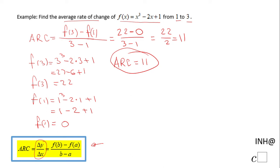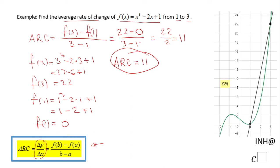What you see here is the graph of f(x) = x³ - 2x + 1, and you see the two values, the two points.